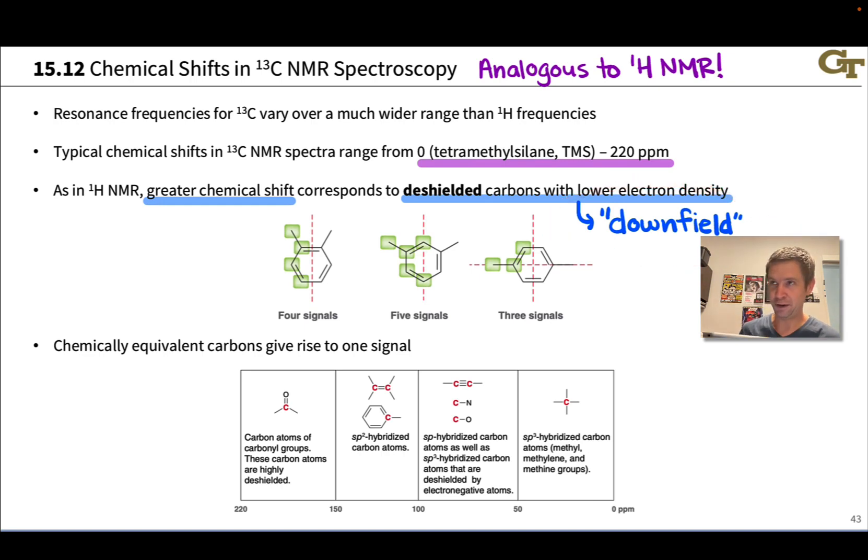Now, as in proton NMR, chemically equivalent carbons, carbons that are homotopic related by an axis of rotation or enantiotopic related by a plane of symmetry, give equivalent chemical shifts and give rise to one signal. And we can use this idea to infer the number of signals we would expect in a carbon NMR spectrum from the molecular structure, and three examples are shown here.